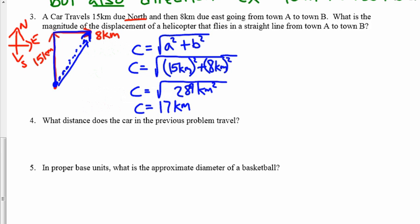Well, upon first glance, this next question, number four, looks very similar to number three. It's asking us, what distance does the car travel? Well, remember this up here was a helicopter flying from the starting point to the ending point, and this distance was 17 kilometers. But the car mentioned in the question had to drive up 15 kilometers and 8 kilometers. So the car's displacement was also 17 kilometers because it finishes 17 kilometers away from where it started.